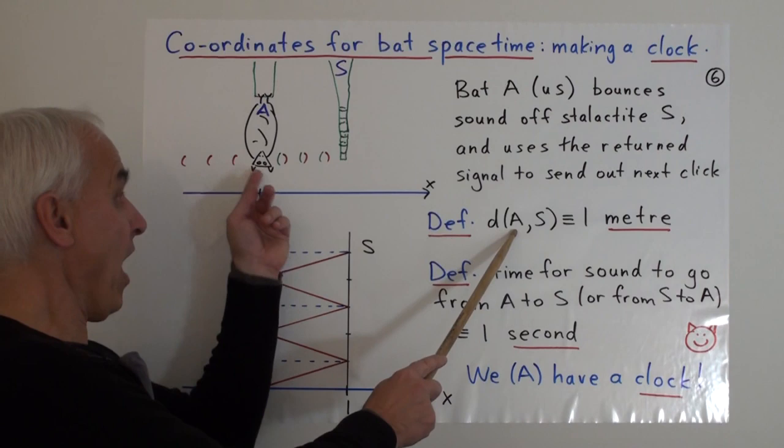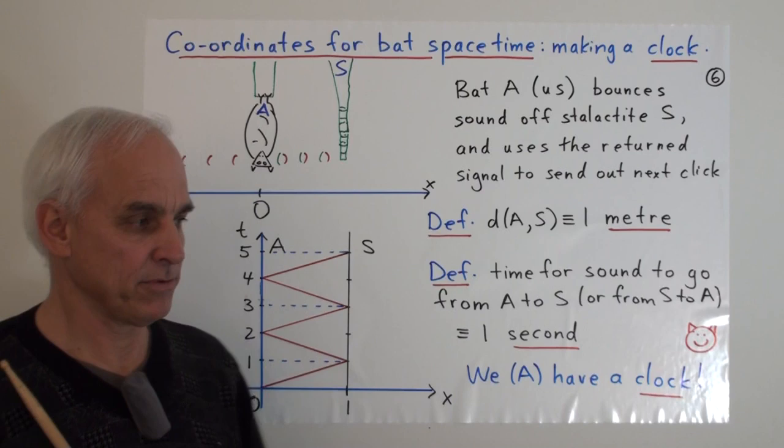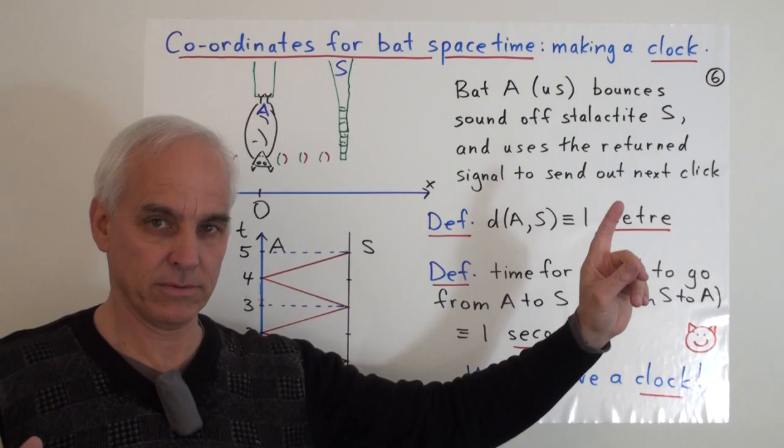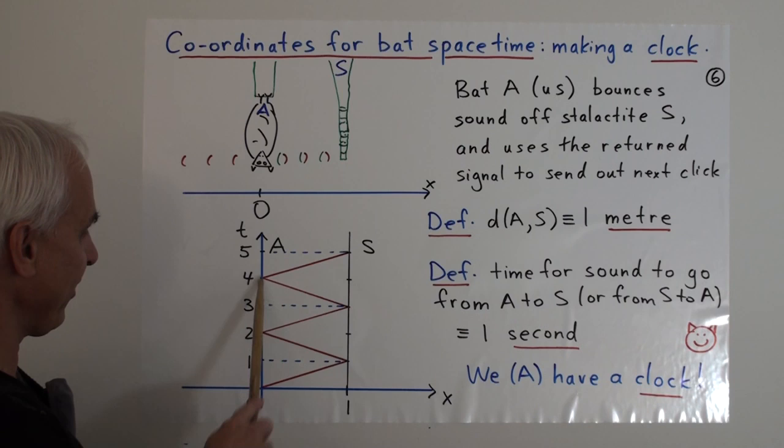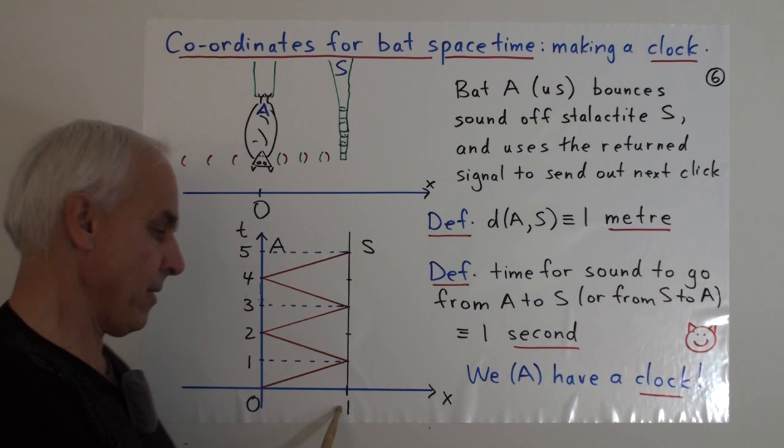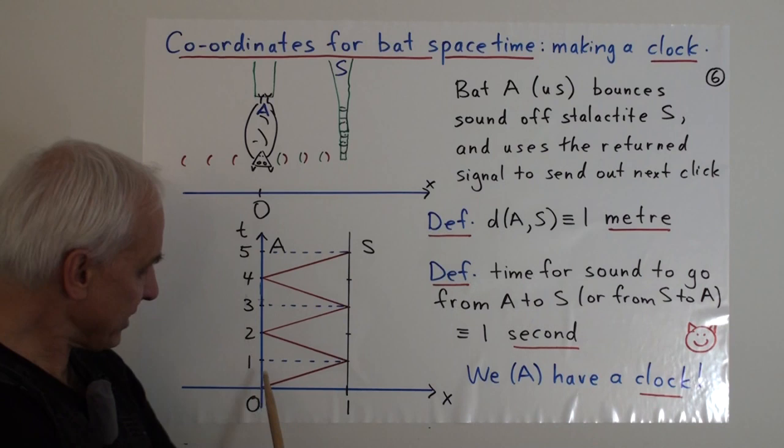So, for example, we could define the distance between us and the stalactite to be, say, one meter. This doesn't have to have anything to do with the usual meter that we know. It could just be a word that we're going to adopt. All right, here's a stalactite. Let us agree that from here to the stalactite is what we're going to call one meter. And now, here is the space-time diagram of not just us at zero, but also now of the stalactite, which is now at position one. We've agreed that this is one meter over. So, the stalactite is just staying right there. That's its world line, and here's us hanging upside down.